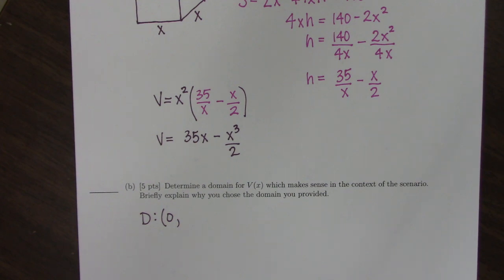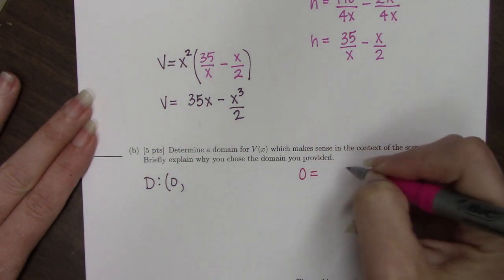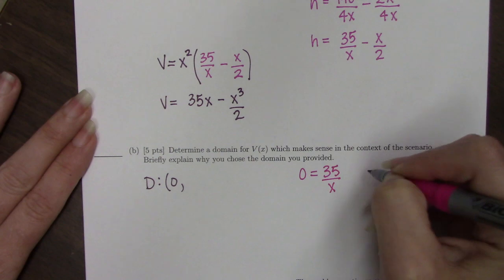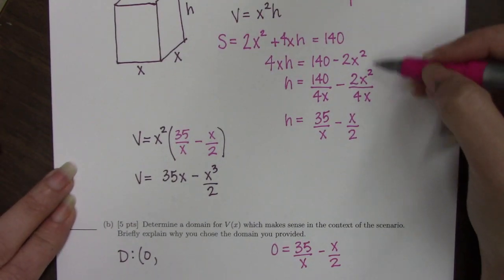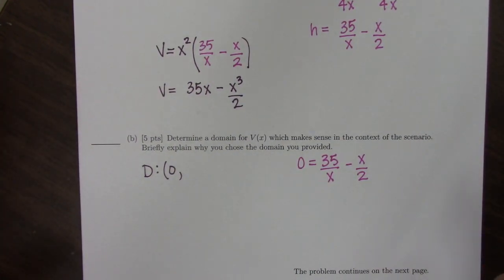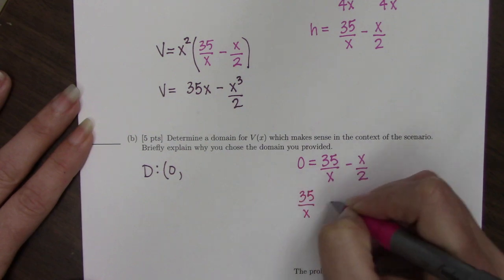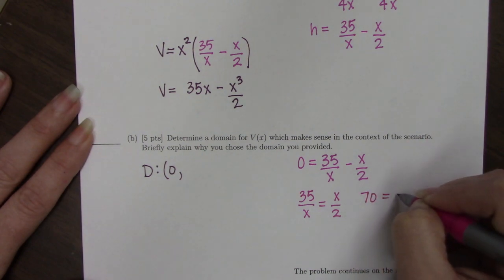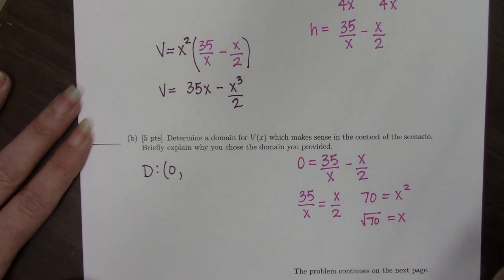I'm going to take my height equation and set it equal to 0. And the constraint, which is what this was, everything in pink here, that's usually what your domain is going to come out of. It's telling you what the limitations are based on the context of the problem and you want to use that to find your domain. So now I've got that 35/x equals x/2, so 70 equals x², so the square root of 70 would equal x.